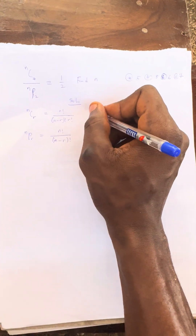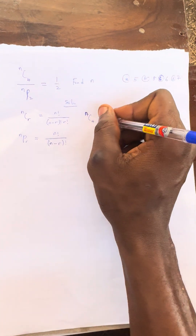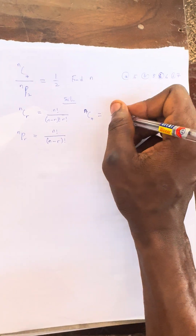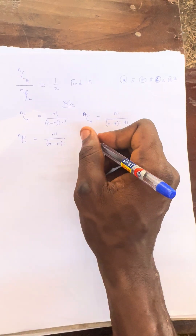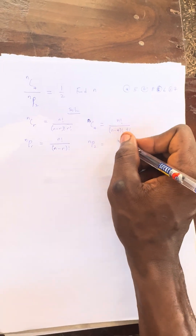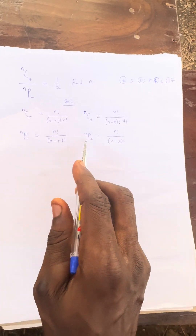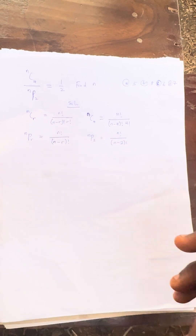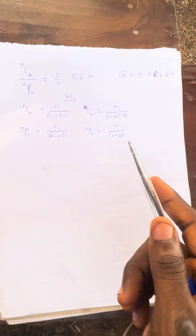Everybody take notes. Let us now use this. That means n combination 4 will be equal to n factorial over (n minus 4) factorial times 4 factorial. Then, what is n permutation 2? n permutation 2, according to the question, will be n factorial over (n minus 2) factorial. We replace n as n, and r is 2 for permutation and r is 4 for combination.